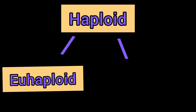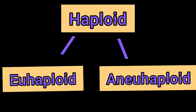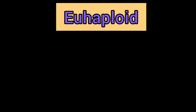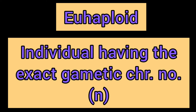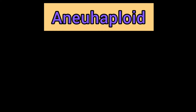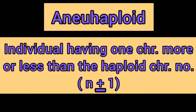Haploids are subdivided into two types: euhaploid and aneuhaploid. A euhaploid is an individual having the exact gametic chromosome number, that is n, while an aneuhaploid is an individual having one chromosome more or less than the haploid chromosome number.